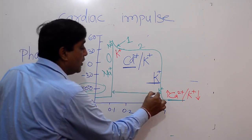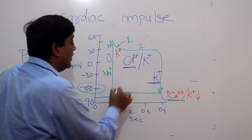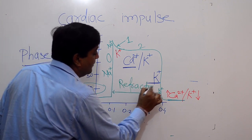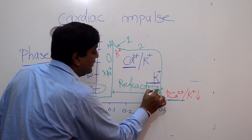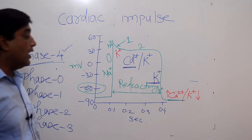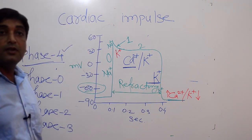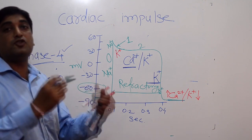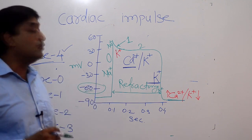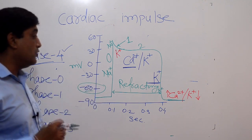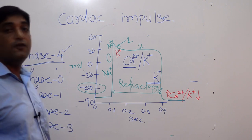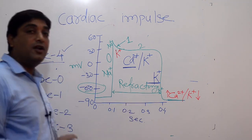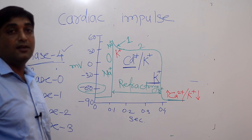This whole duration is called the refractory period. During this period your heart has sufficient time to eject all the blood into our various chambers, which is very important for perfusion of organs. During this period your heart will not receive any other impulse.